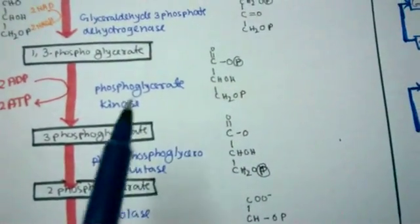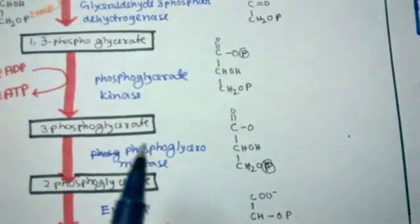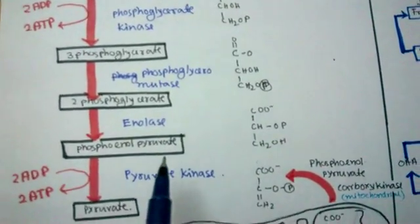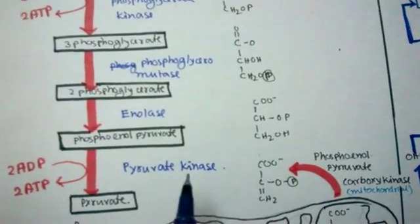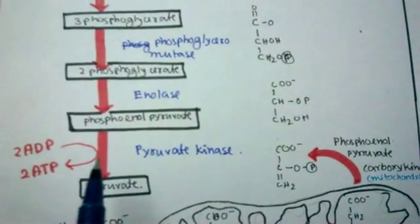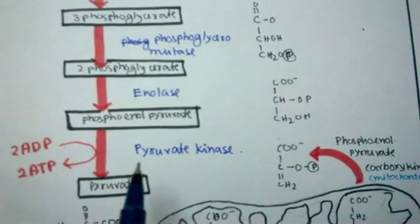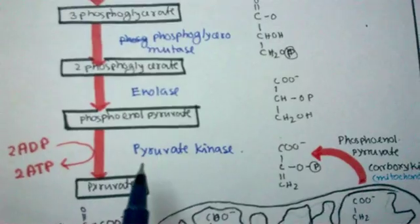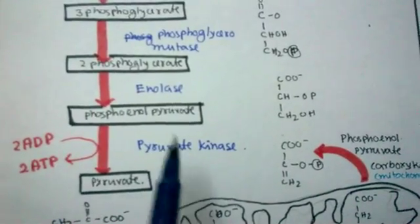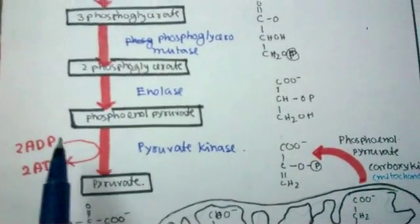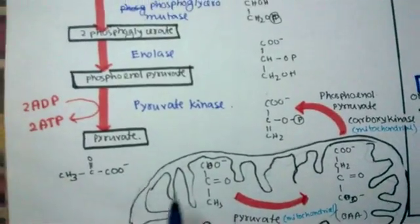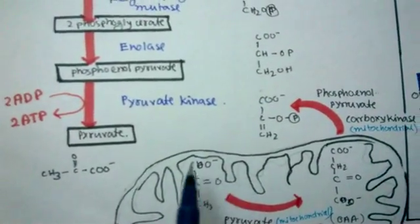Phosphoglycerate kinase converts the substrate to 3-phosphoglycerate, which is further converted to 2-phosphoglycerate, and then to phosphoenolpyruvate. Another important enzyme, pyruvate kinase, converts phosphoenolpyruvate to pyruvate, and again substrate level phosphorylation takes place — ATP is generated as pyruvate kinase takes phosphate from the substrate and phosphorylates ADP. This pyruvate is later transferred into the mitochondria for further processing by the Krebs cycle.